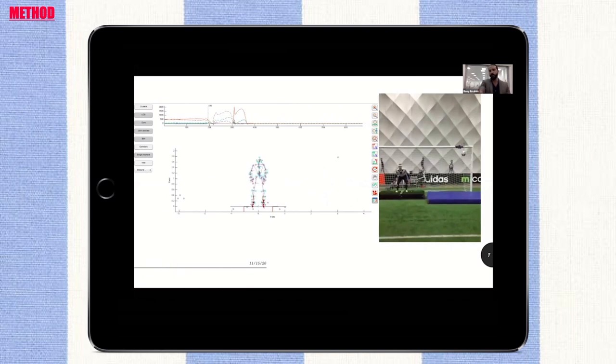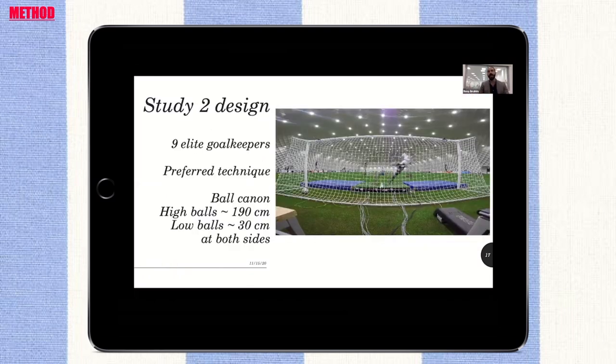The leg length of each goalkeeper was measured from the palpated greater trochanter to the ground while the subject was standing bare feet. The knee and hip joint angles were defined as the Euler angles of the shank anatomical coordinate system relative to the thigh anatomical coordinate system, and of the thigh anatomical coordinate system relative to the pelvis anatomical coordinate system, respectively.